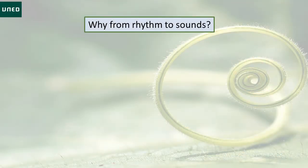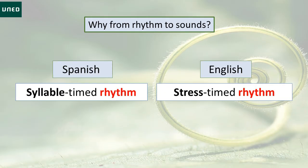Why from rhythm to sounds? Well, one of the main differences between English and Spanish, which is hardly ever mentioned in English classes, is the different rhythmic patterns used in the two languages. Spanish has a syllable-timed rhythm, which means that all syllables tend to last approximately the same duration, whereas English rhythm is based on stresses, so there's the same duration from one stressed syllable to the next.